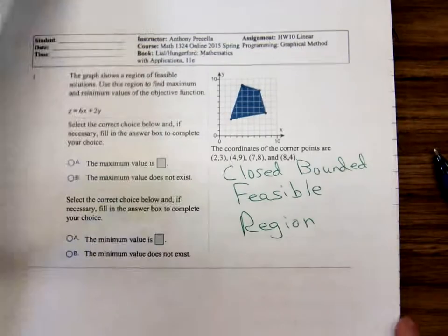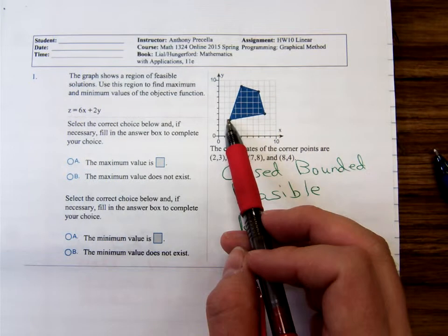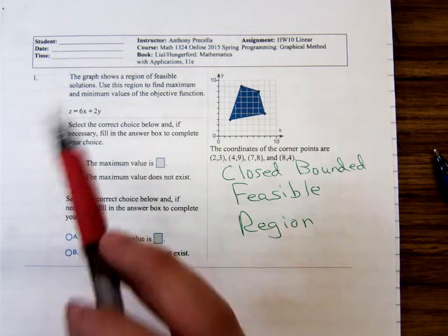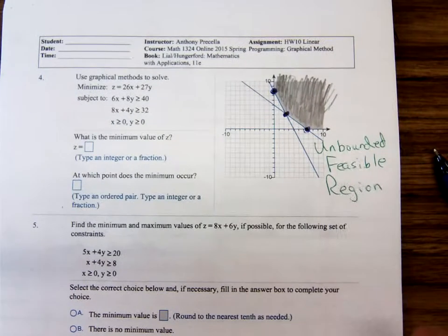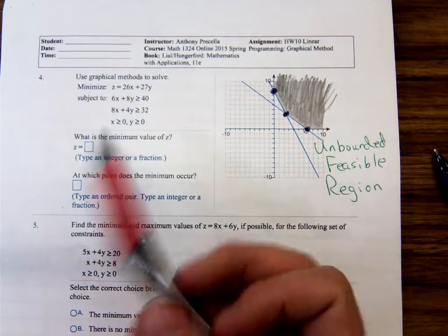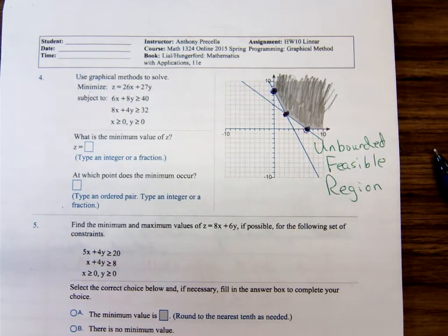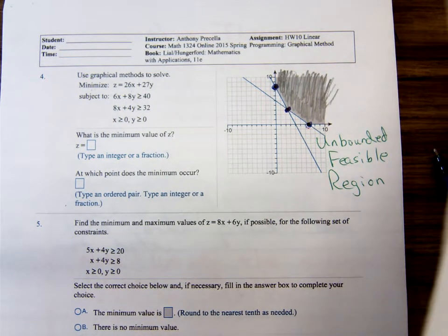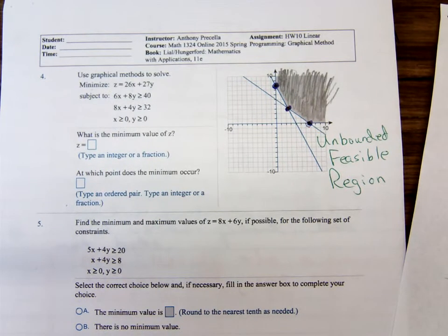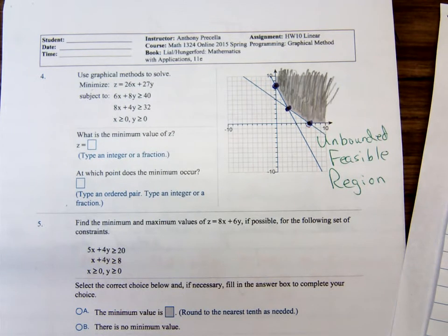To summarize: for a closed bounded feasible region, take those corner points, plug them into the objective function — the biggest value is the maximum, the smallest is the minimum. For an unbounded feasible region, take those corner points, plug them into z, and convince yourself that the largest value at the corner points is not actually the maximum, so the smallest value at the corner points would be the minimum. Once you watch the examples in the upcoming videos, it will become much clearer.